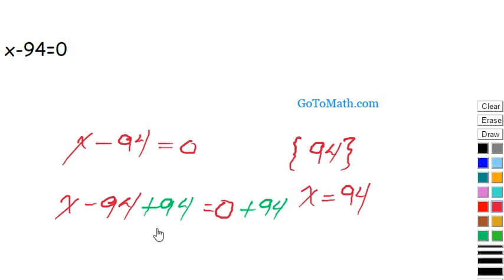And so we're going to end up with x is equal to, and of course, 0 plus 94 is just 94. See that? Alright. Pretty simple. Just add whatever this value is. Make sure you add it to both sides.